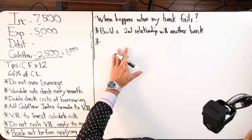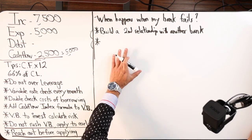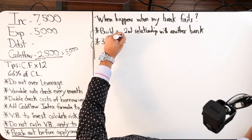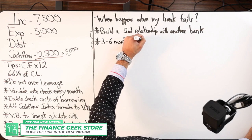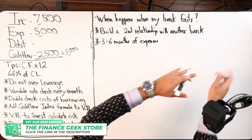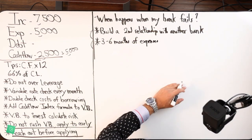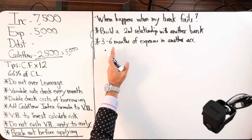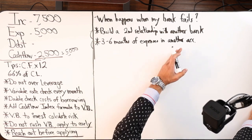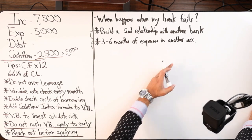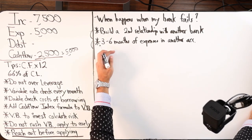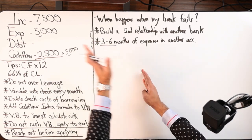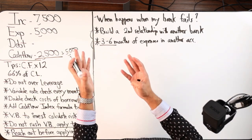The other thing that I'm thinking of that we could do as velocity banking practitioners is have anywhere between three and six months of expenses in a separate account, say maybe at another bank. In a separate account—three to six months worth of expenses in another account.